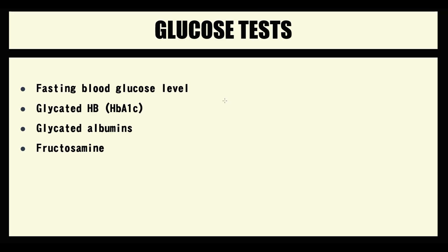In clinical practice, to determine glucose level in the blood, we use four tests: fasting blood glucose level, glycated hemoglobin, glycated albumins, and fructosamine. We also have glucose tolerance tests, but we use the glucose tolerance test to determine whether a patient can use and store glucose normally, so it's more like a functional test.